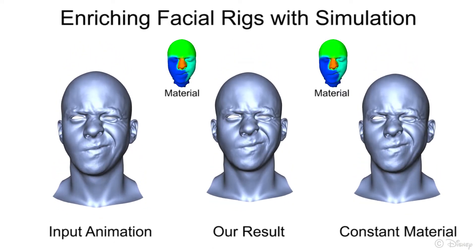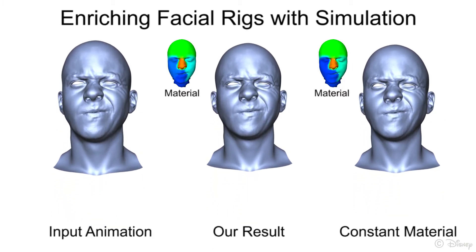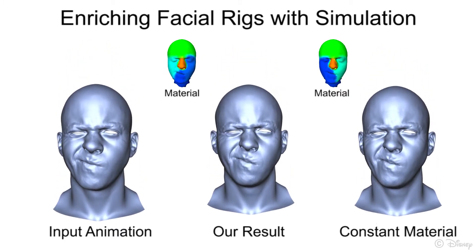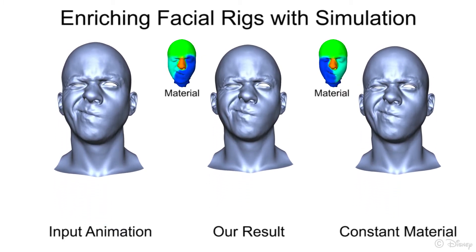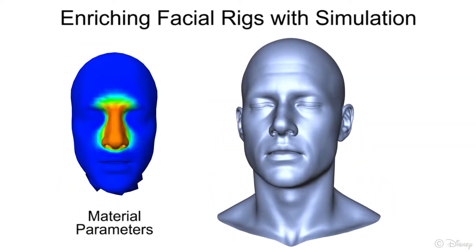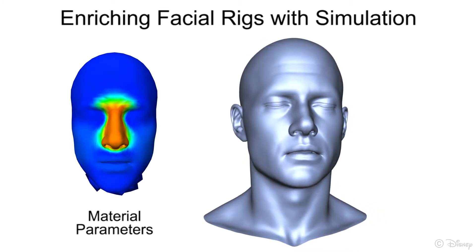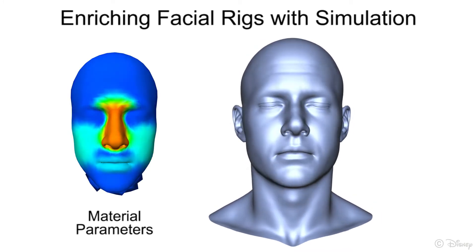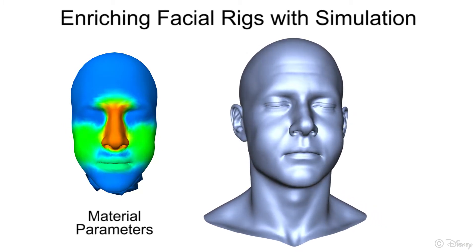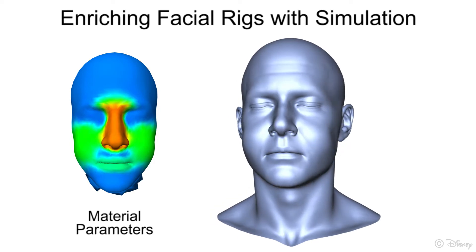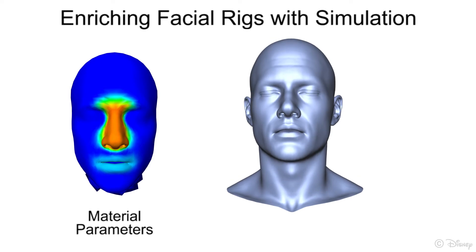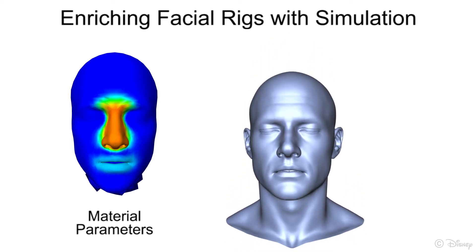Similarly, a spatially varying but temporally constant material is also insufficient. Only our spatiotemporally changing material parameters can achieve the desired motion. Here's another example on a different character, where the expression changes from neutral to puffing cheeks while shaking the head. Notice that the cheeks and lips become stiffer when the cheeks are puffed with air, naturally mimicking reality. Material parameters are shown on the left. In another example of running, the expression is changed from neutral to smile, and our result shows smooth changing of the dynamics with the performance.